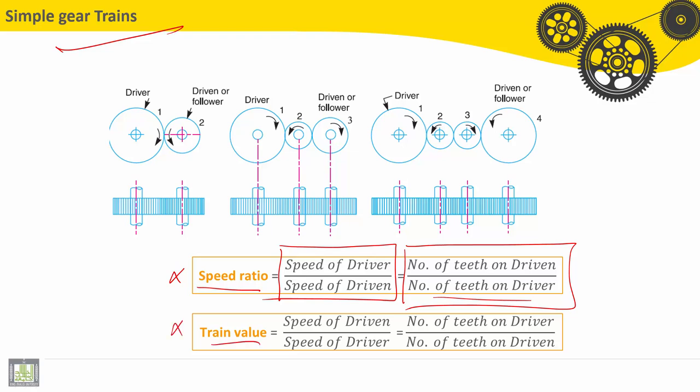And also we can find here the train value, which is the opposite of the speed ratio. So it is speed of the driven divided by the speed of the driver, and equal to number of teeth on the driver divided by the number of teeth on the driven.